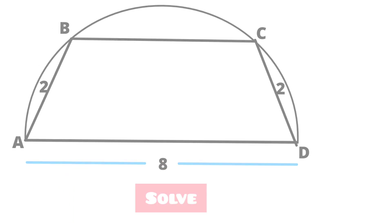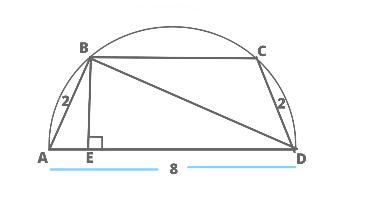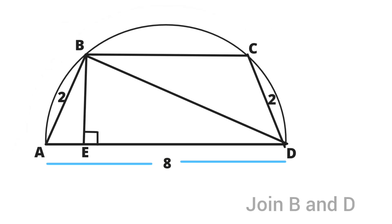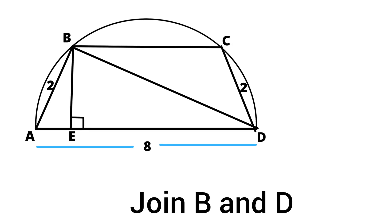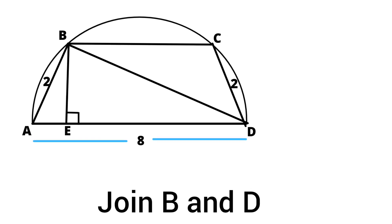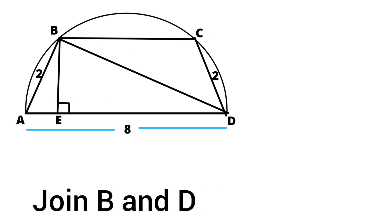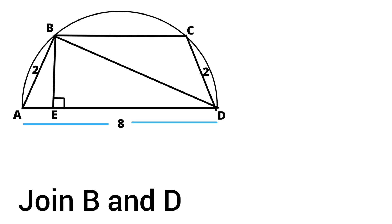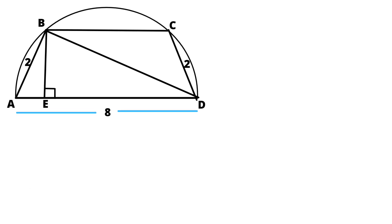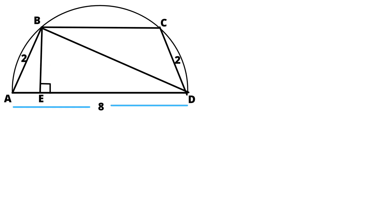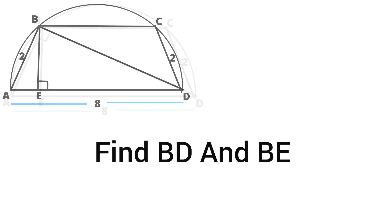To find the length of BC, let's join B and D and also draw a perpendicular BE to the diameter AD. Now, let's first find BD and BE.